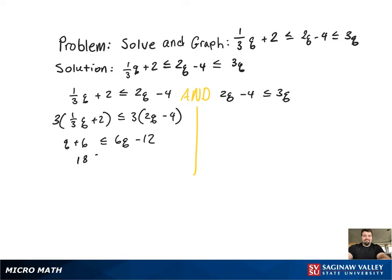After that, it's just getting all the constants to one side, variables to the other, and then dividing by the 5 at the end there. Now Q is solved for on the left-hand side.